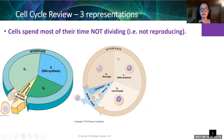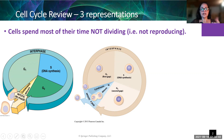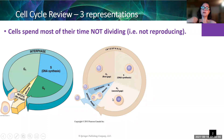If the cell receives the appropriate signals and conditions are right — enough nutrients, enough space — the cell moves on to copy its DNA. Why stop yourself from copying DNA? Because it's really expensive. It takes a lot of energy and raw materials. If you don't need to divide, don't do it. The cell copies the DNA, other things get lined up, then the cell moves into mitosis. At the end of each cycle, a single cell has become two cells, then four, then eight, then sixteen — doubling each time.